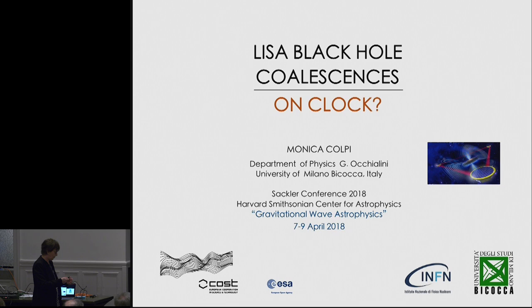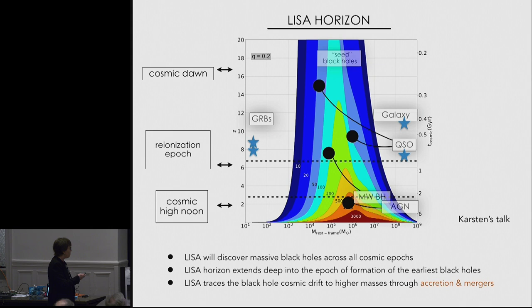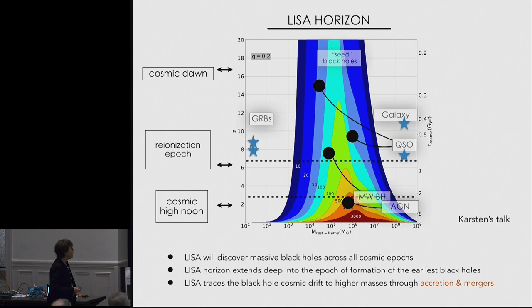LISA aims at discovering massive black holes mainly across all cosmic ages. Here I'm showing lines of constant signal-to-noise ratio in the plane of redshift versus binary mass in the source rest frame. You can clearly see that LISA will detect black hole coalescences in the mass interval between 10^4 and a few times 10^7 with very high signal-to-noise ratio.